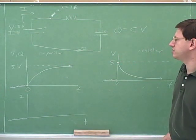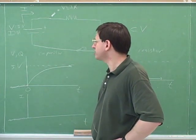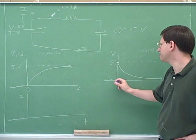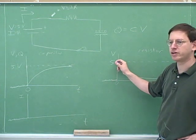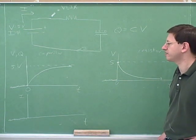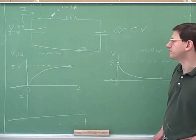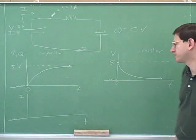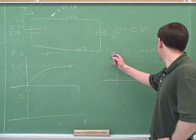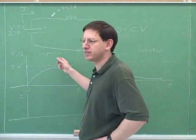Capacitors resist jumps in voltage, but notice that some things in circuits can make discrete jumps. Since the voltage doesn't jump on the capacitor, it had to jump on the resistor — the resistor's voltage jumped from zero up to five volts immediately after we closed the switch. It's important to label which device a voltage graph belongs to, because the resistor and capacitor have entirely different graphs.